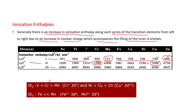For the third ionization enthalpy, the general trend is an increase from left to right. But the third ionization enthalpy of manganese is very high, while that of iron is relatively low. The reason is that Fe2+ has a 3d6 configuration, so removal of the next electron is comparatively easy to attain the stable 3d5 configuration. But Mn2+ already has the 3d5 configuration, so removal of one more electron from Mn2+ is difficult — hence the third ionization enthalpy of manganese is very high.